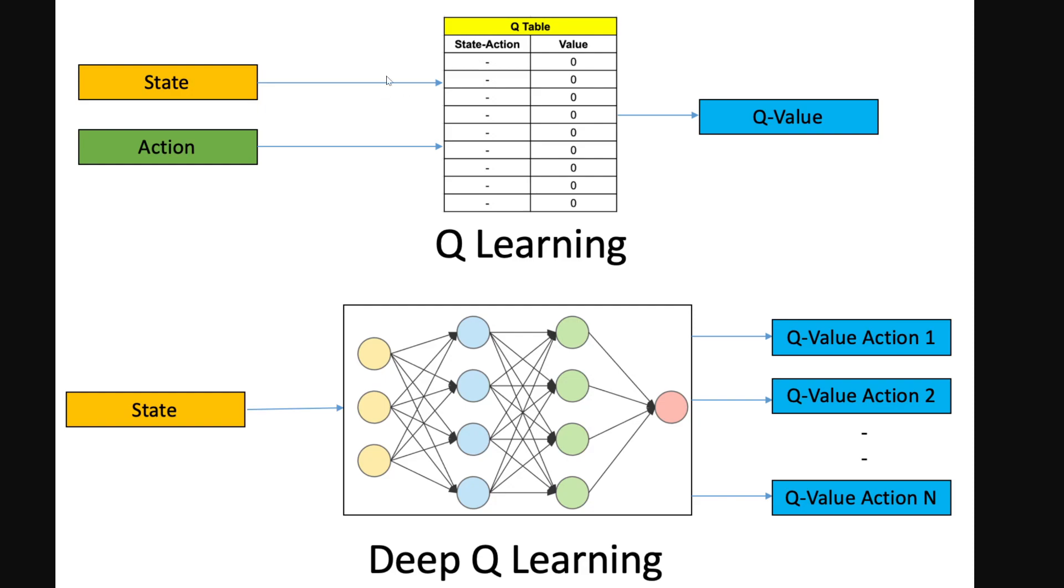If you remember from our previous videos how we did tabular Q-Learning, you specified both the state and the action, and that would give you the Q value.